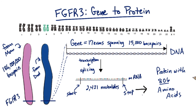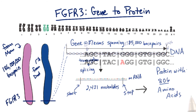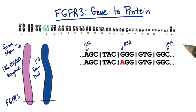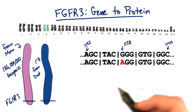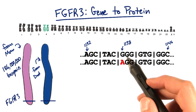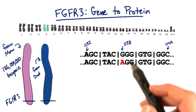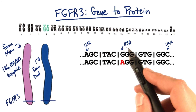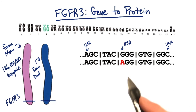Now let's look at one allele of this gene that's associated with achondroplasia. One allele of the FGFR3 gene contains a G to A — a guanine to adenine — mutation at position 1138 of the coding region.